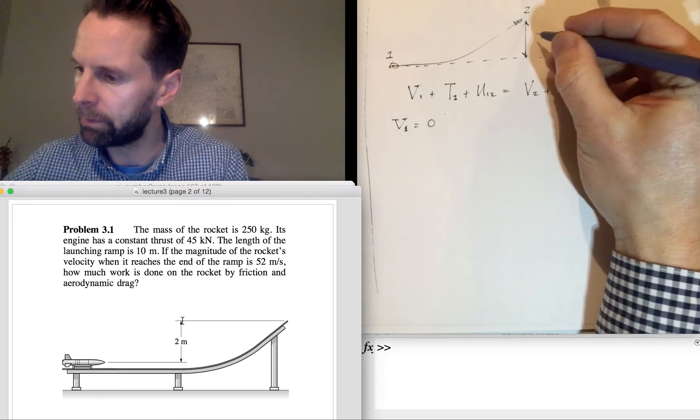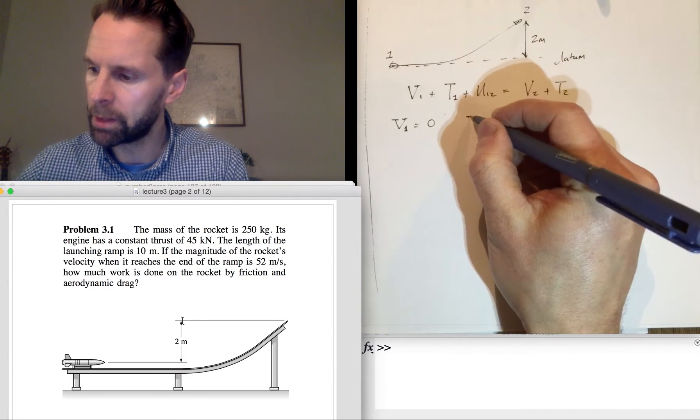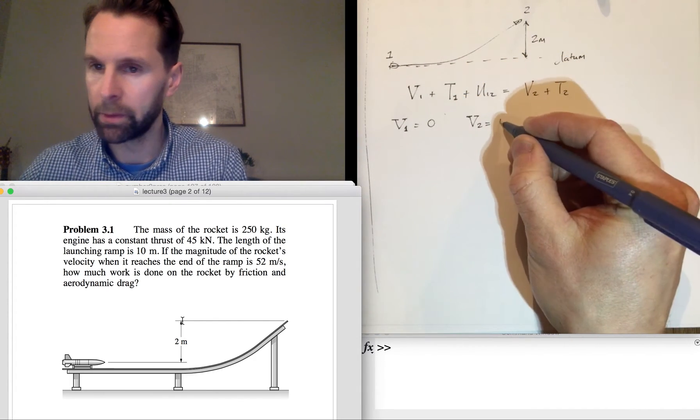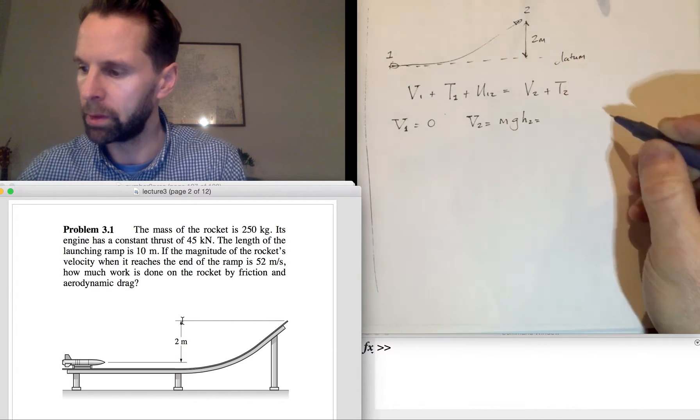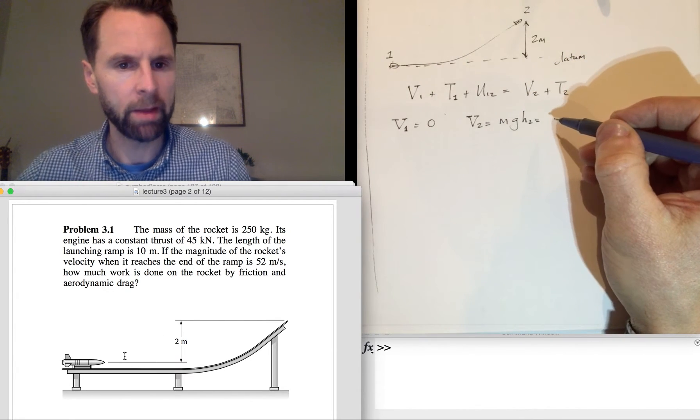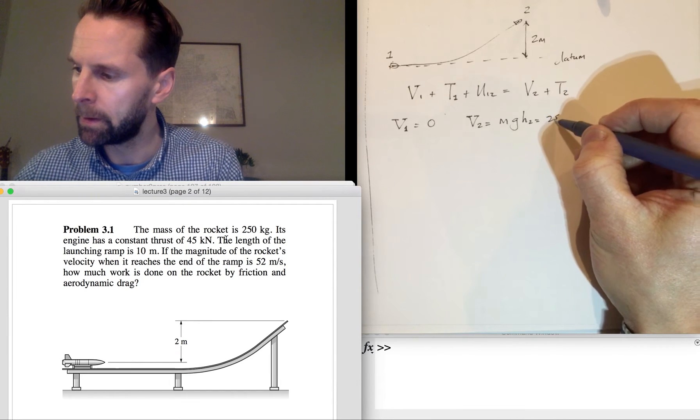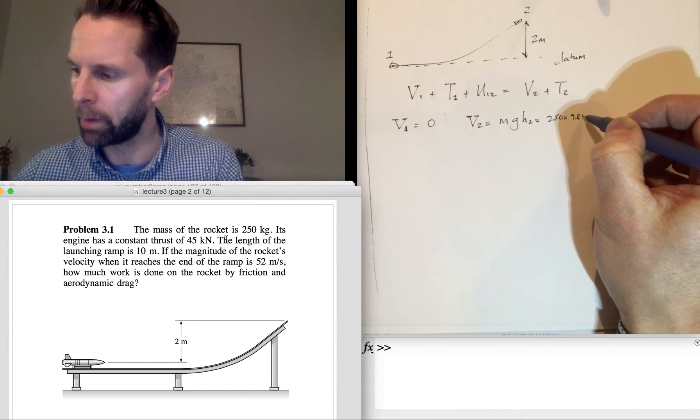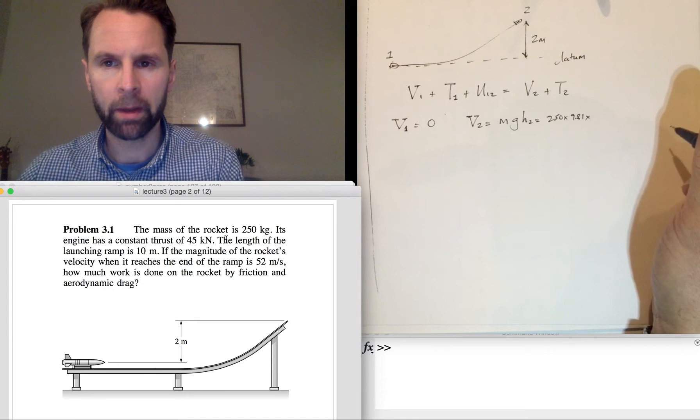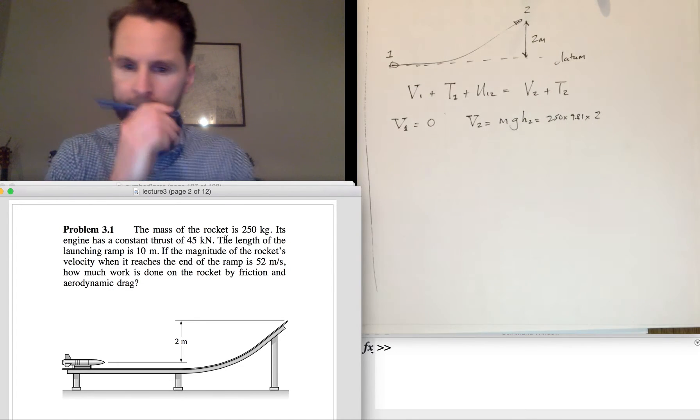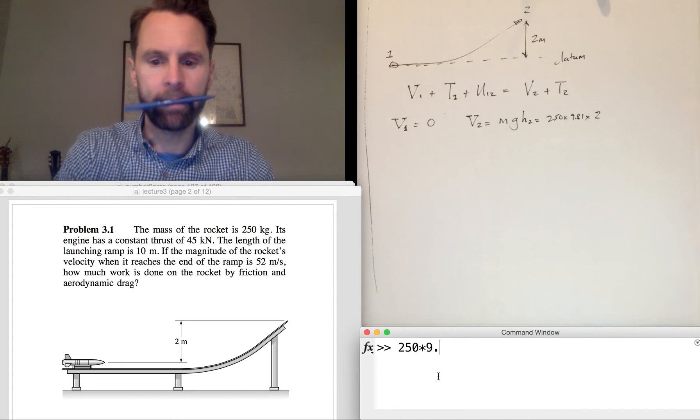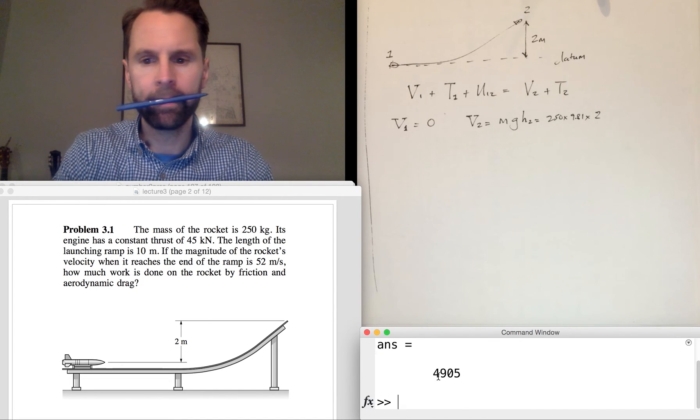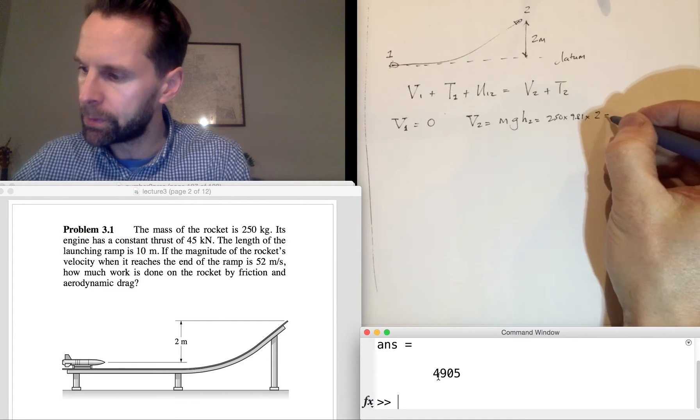So the potential energy at 2 is equal to mgh2, which is equal to the mass, which is 250, times 9.81 times 2. So quickly do a sum: 250 times 9.81 times 2 equals 4.9 kilonewton-meters.